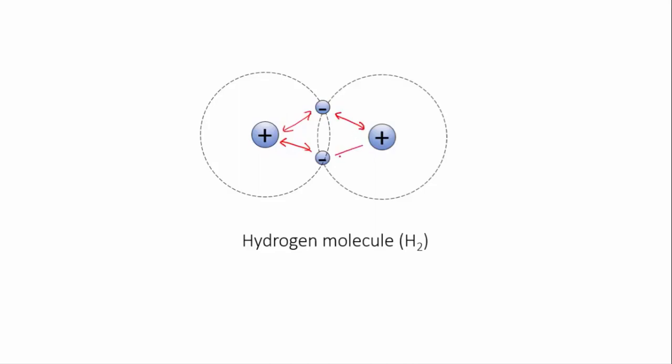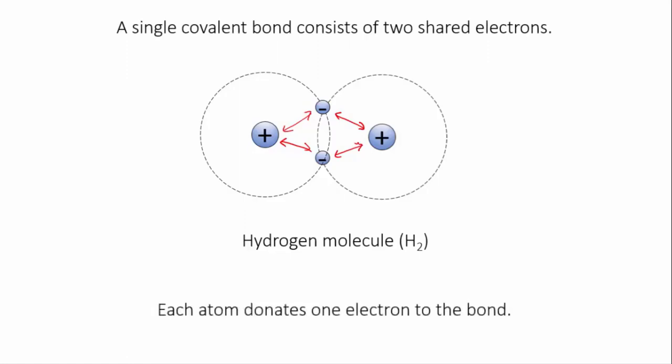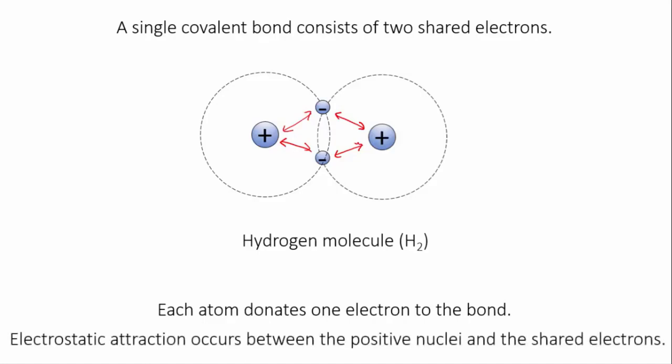A covalent bond always consists of two electrons. When two atoms form a covalent bond, the usual situation is that each atom donates one electron to the bond, although there are examples where one atom will donate both.